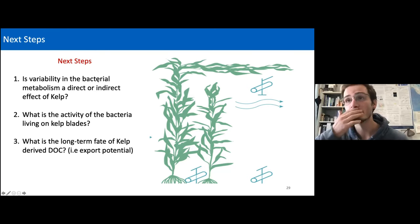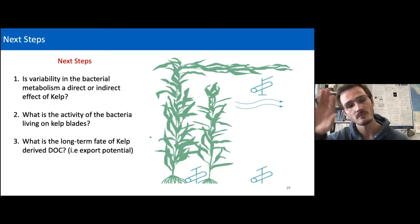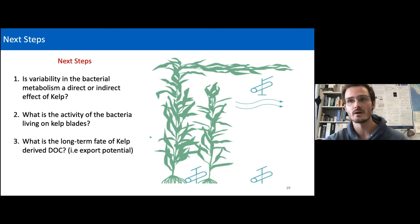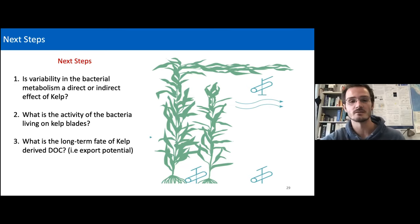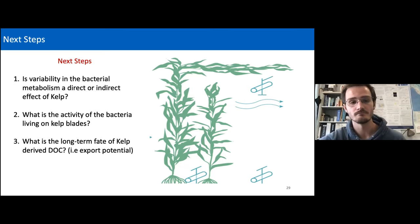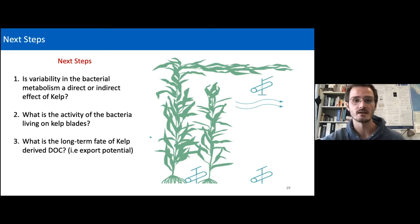Next up is some musing about where we hope to take these types of experiments in the future to answer questions about kelp-related DOC. The first question: is the variability seen in bacterial metabolism inside and outside the kelp a direct or indirect effect of the kelp? Is bacterial metabolism being directly stimulated by DOC released by the kelp, or is it that the kelp fosters a dense community of invertebrates and fish which may be directly releasing labile organic matter inside the canopy?